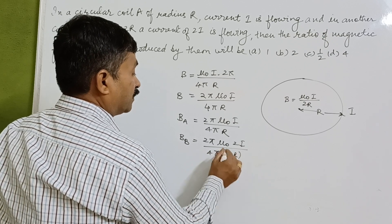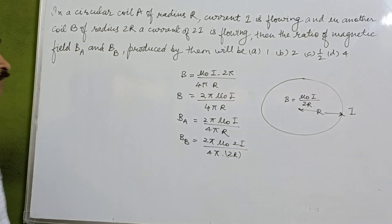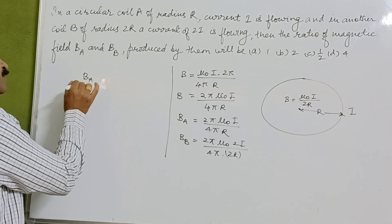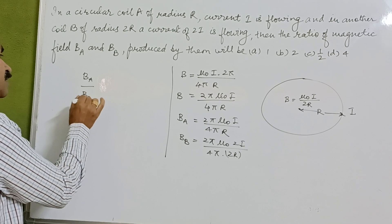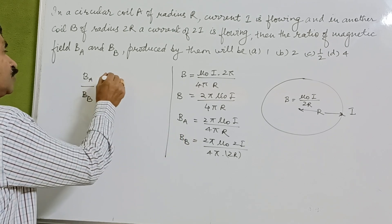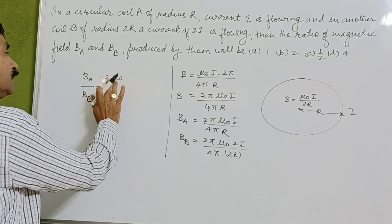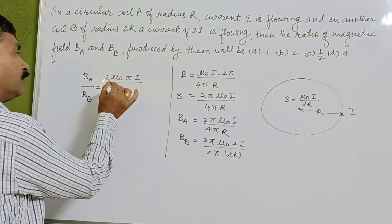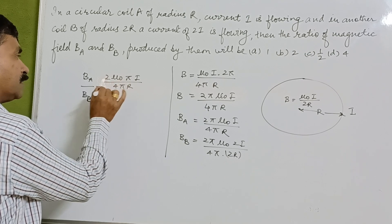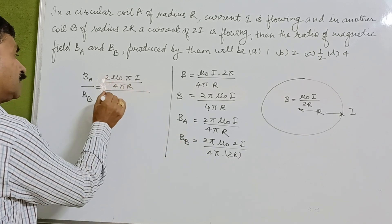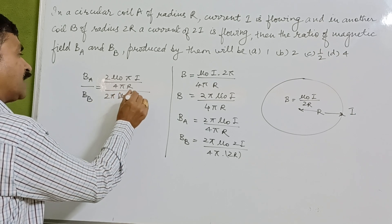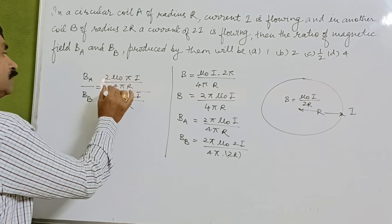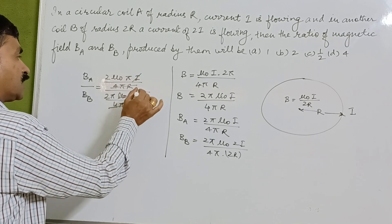Now we take the ratio Ba / Bb. So it is: [2π μ₀i / 4πr] divided by [2π μ₀(2i) / 4π(2r)]. The 2π terms cancel, and the μ₀ terms cancel from numerator and denominator.